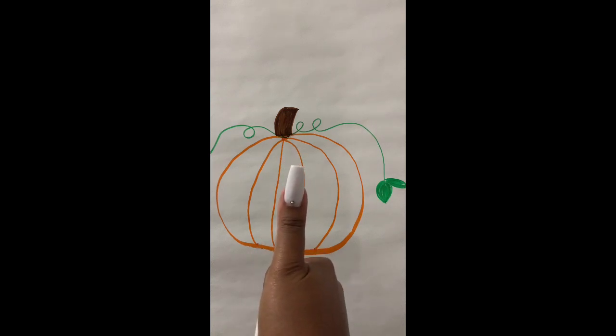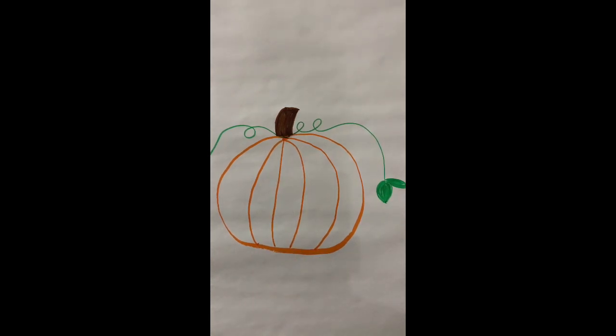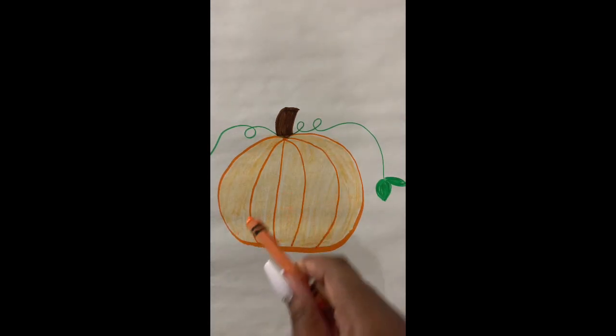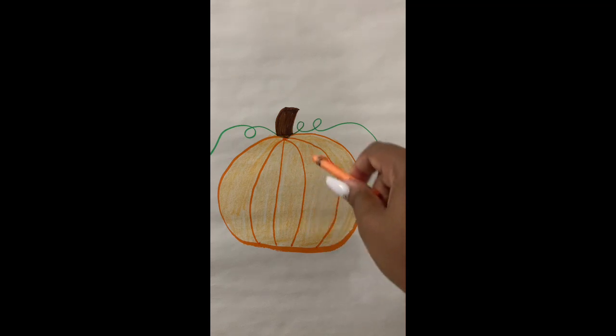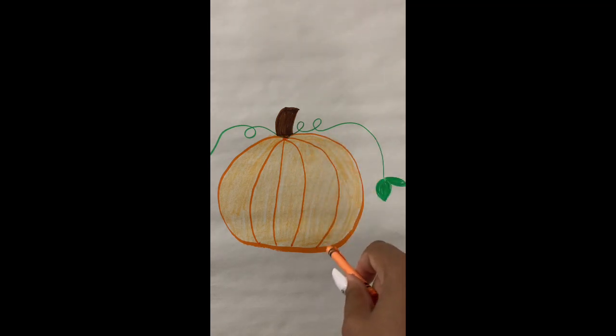All right, now I need to color in my pumpkin. I use my crayon to fill in the inside of the pumpkin, going up and down and trying my best to stay in the lines.